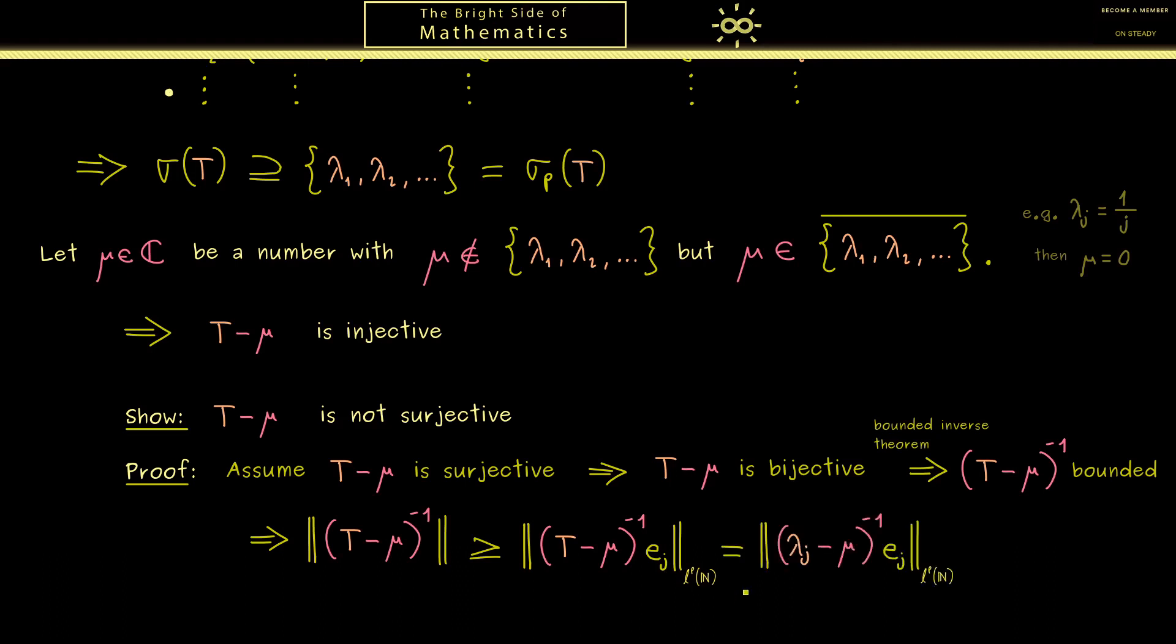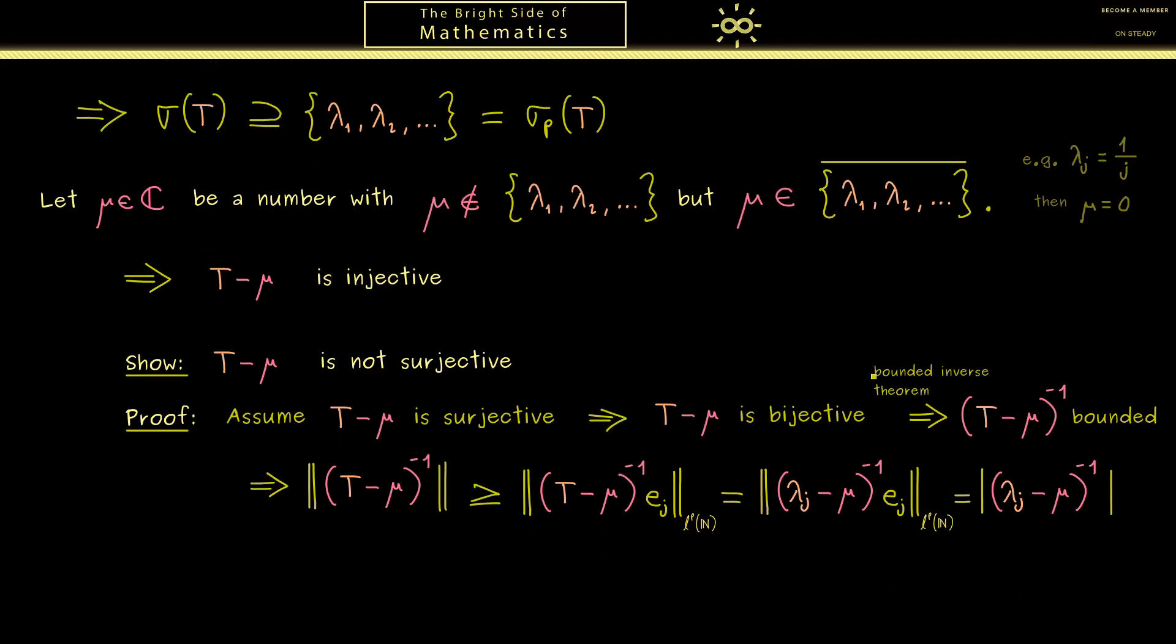For this reason the acting of the inverse operator is easy to calculate. We just get the inverse of the number lambda j minus mu. Also very simple is then calculating the p norm. We just get the absolute value of this number. And at this point you should see a problem here.